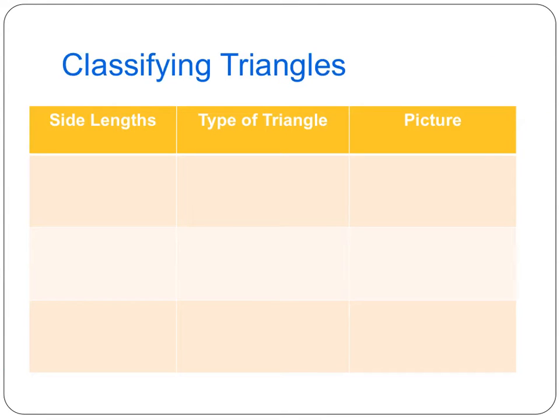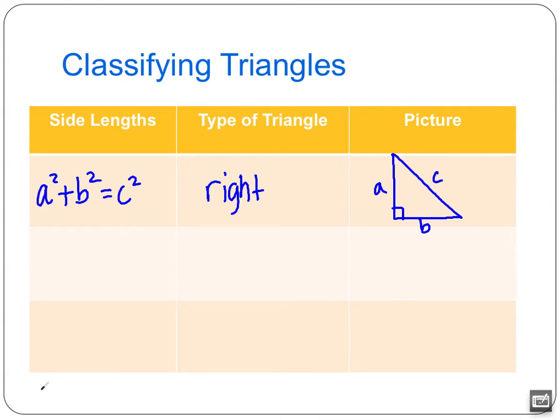Okay, so right now draw yourself this table. Pythagorean theorem, we already learned. That's going to go in our table. So one possibility is that a squared plus b squared is equal to c squared. Remember that this theorem is only used for right triangles. So when a squared plus b squared is equal to c squared, we have a right triangle. We're going to draw ourselves a picture of that right triangle. Remember, a and b are the legs. And c is the hypotenuse, the largest side.